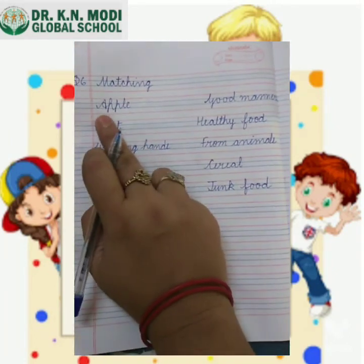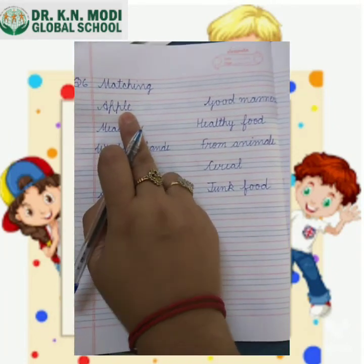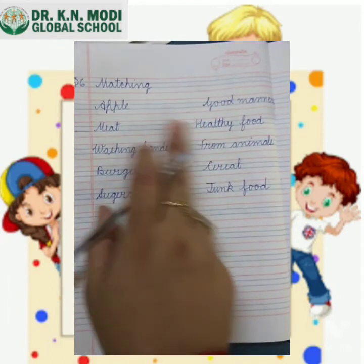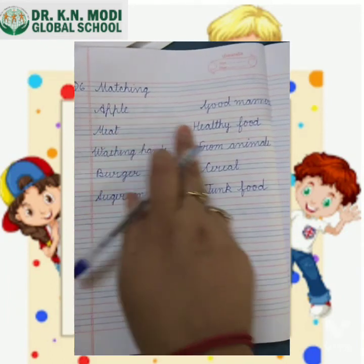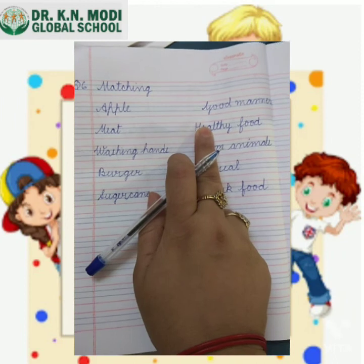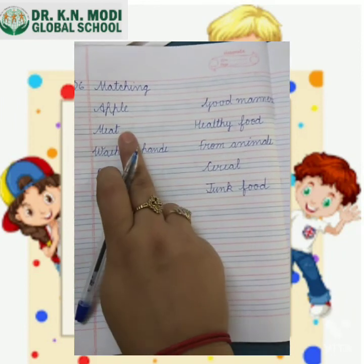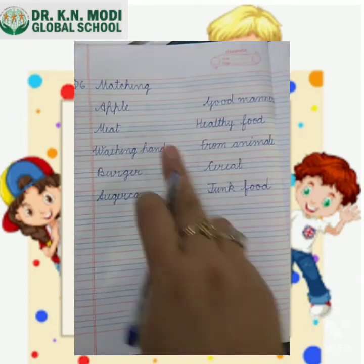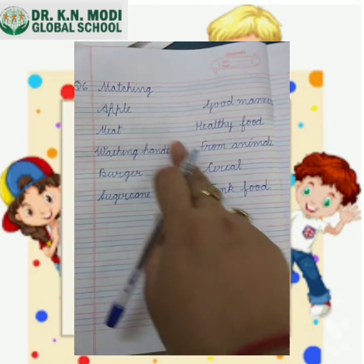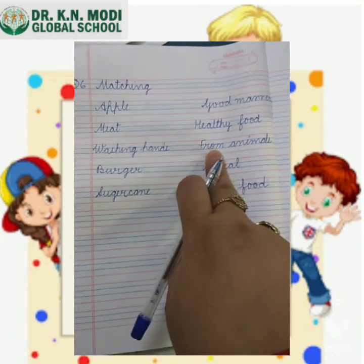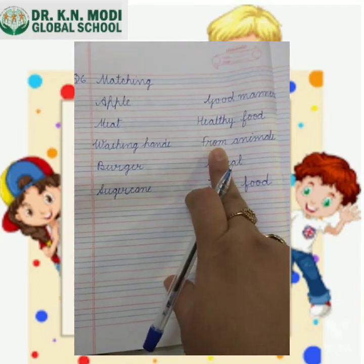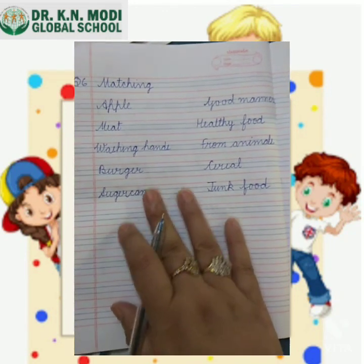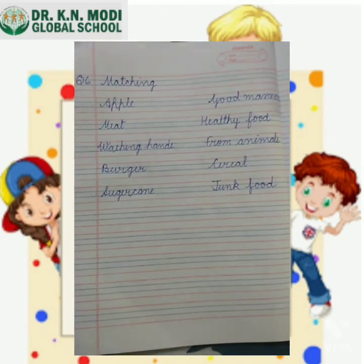For example, apple is a healthy food, so you will match apple with healthy food. Meat - we get meat from animals, so you have to match meat to animals. You have to do this matching work by yourself.